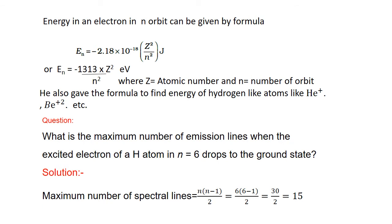There is a question: what is the maximum number of emission lines when an excited electron of hydrogen atom in n = 6 returns to the ground state? The formula for the maximum number of spectral lines is n(n−1)/2. Here n is the orbit from which the electron returns. When coming back from the 6th orbit, the total number of spectral lines will be 15.